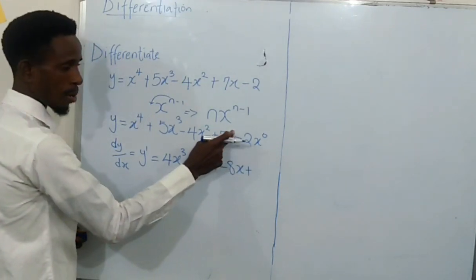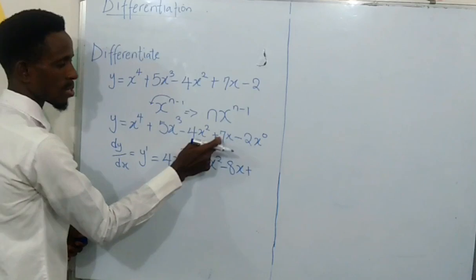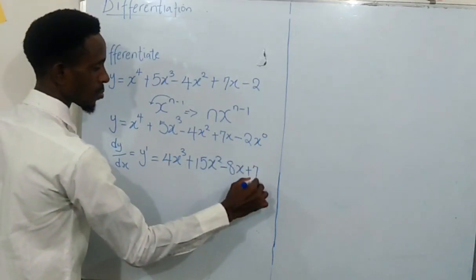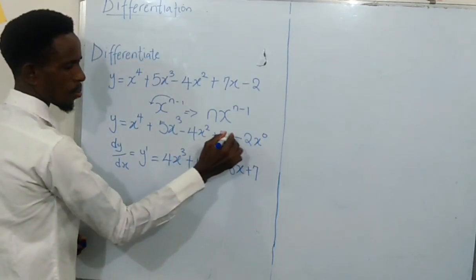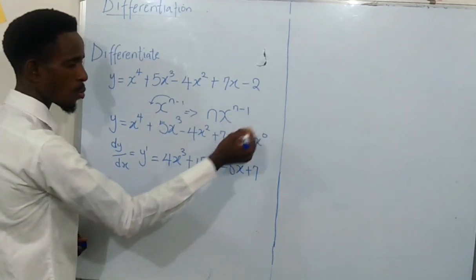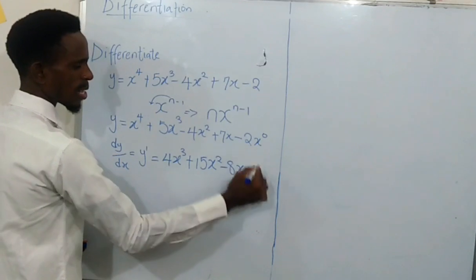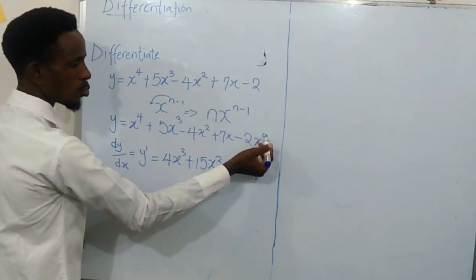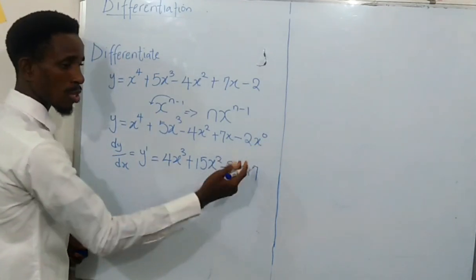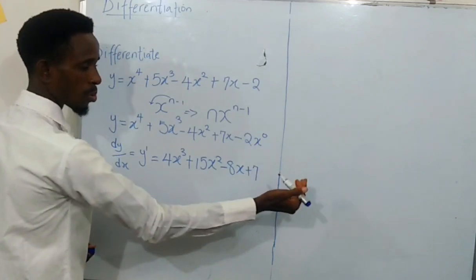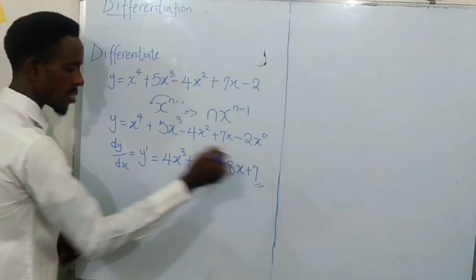Then plus, here is 1, right? x to power 1. So 1 times 7 is 7. Then this, 1 minus 1 is 0. So x to power 0 is 1. So I'm not putting the 1 here. Then minus, 0 times 2 is 0. So there's no need of putting the 0 here. So this is it.